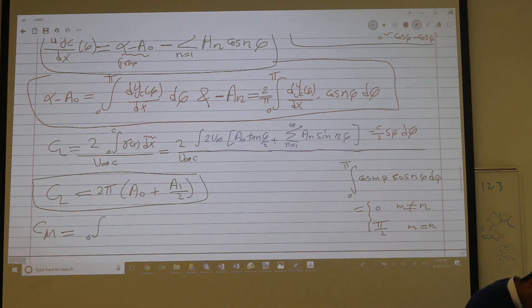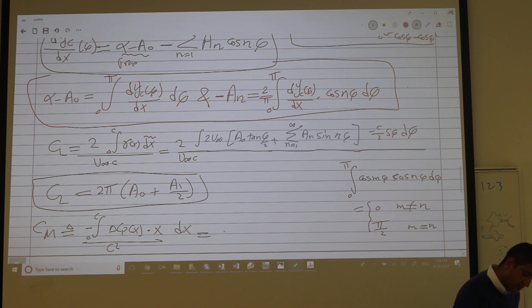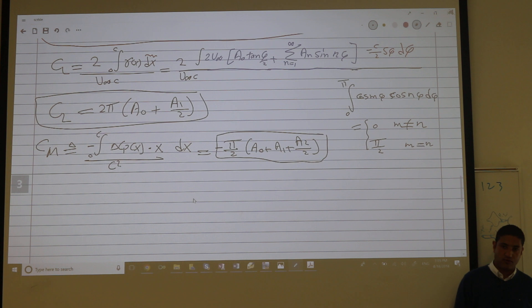And the moment cm is by definition integral from 0 to c, your pressure times x in negative dx and we normalize by c squared. So this is negative pi over 2, a nought plus a1 plus a2 over 2. So the moment depends only on the first three coefficients. For lift and moment purposes you just need the first three coefficients.